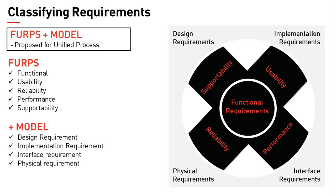The FURPS+ model also provides additional requirements under the general level of non-functional requirement. For example, the implementation requirement where the constraints are more related to the coding or the construction of a system — for example, a business requires a standard platform or implementation language like C, Java, or Visual Basic. Interface requirement is a requirement to interact with an external party, how the system has to call or do third-party calls, perhaps over HTTPS using a SOAP call or something like that. In terms of design requirement, it's primarily a constraint related to the design of the systems — for example, a relational database is required or a single sign-on function is required.